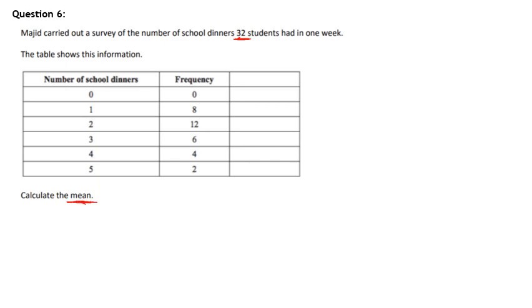So what this table is saying is that zero students had zero school dinners, which is zero school dinners. Eight students had one school dinner, which is a total of eight dinners.